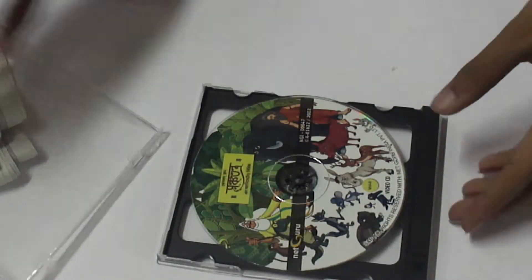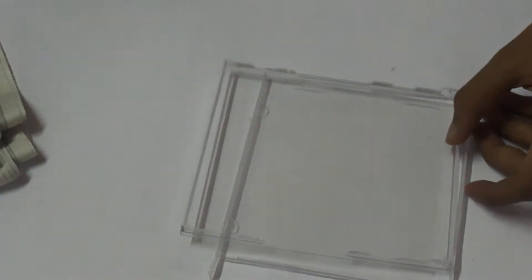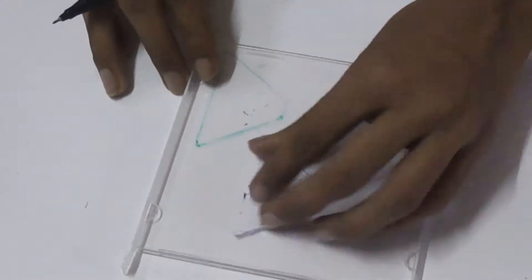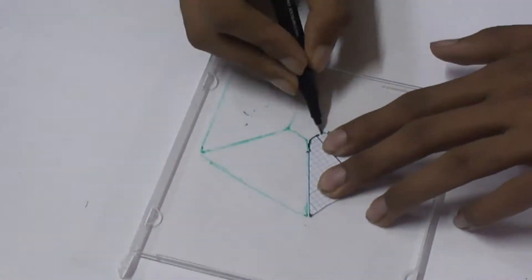And now, you need a CD case and a marker. Draw this mark on your CD case and start cutting.